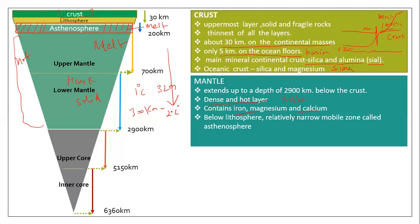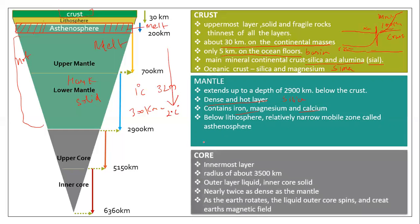Below the mantle is a relatively narrow mobile zone — the asthenosphere. Next is the core, which is the innermost layer. Its radius is almost 3500 km, and the Earth's total radius is about 6360 km. The core is divided into two parts: outer core and inner core.